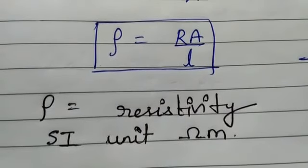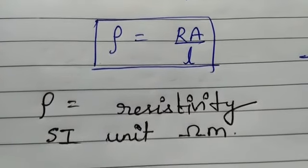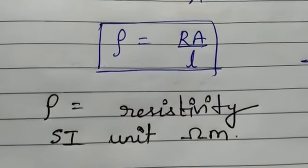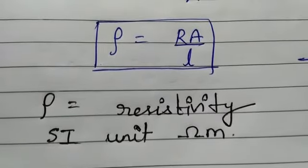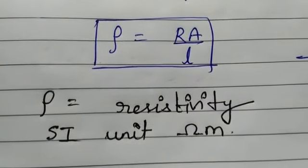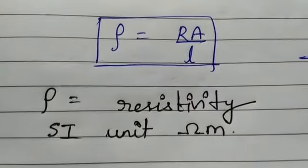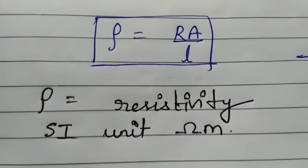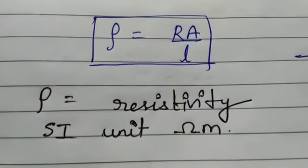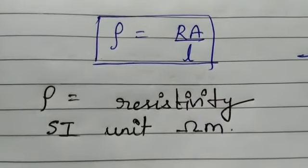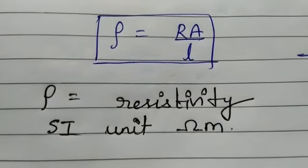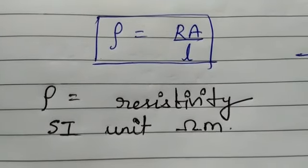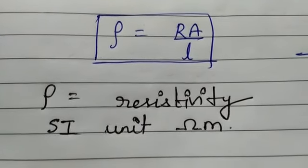So resistivity only depends on two things: the nature of the conductor and temperature. Be very careful about this, because it can be asked in practical exams, objective questions, and fill-in-the-blanks. Don't be confused by the formula — resistivity does not depend on area or length; it is independent of them. It only depends on temperature and the nature of the conductor. This is it for today's lecture. We will meet in the next lecture. Till then, goodbye, take care, and do some productive work.